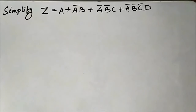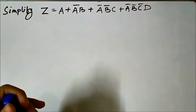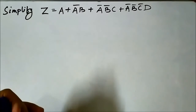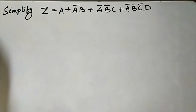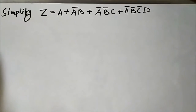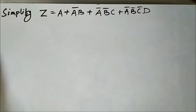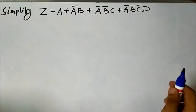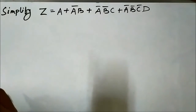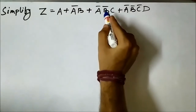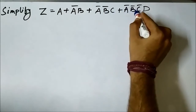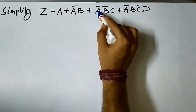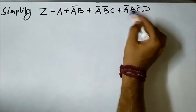Here is another boolean expression which we have to simplify. The first step again is to find out the common terms. Looking at the terms āb̄c and āb̄c̄d, we can see that āb̄ is common in both.